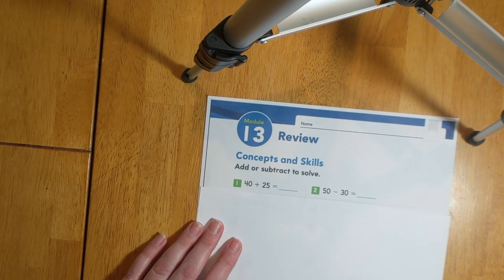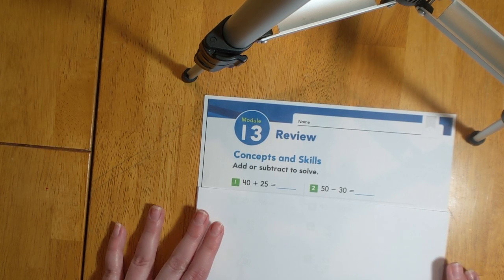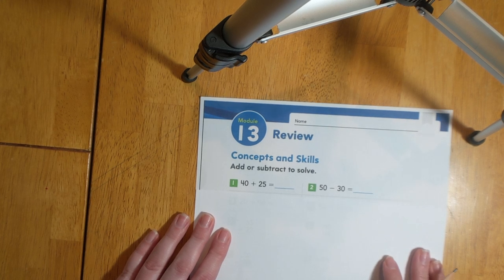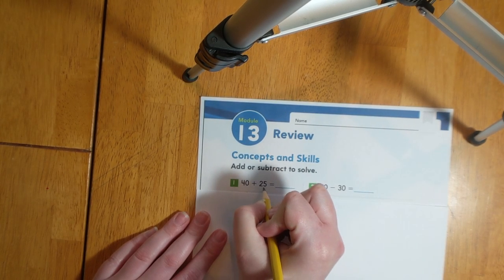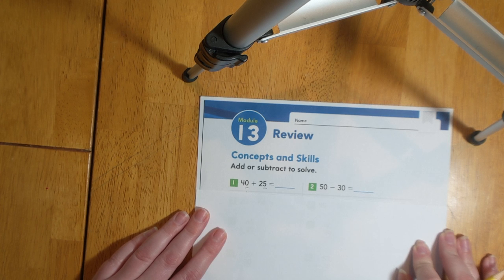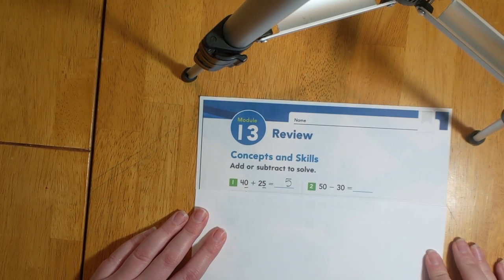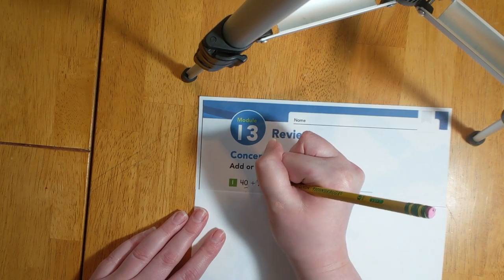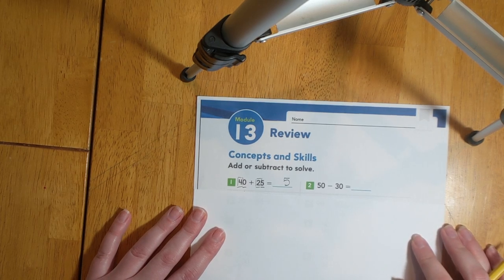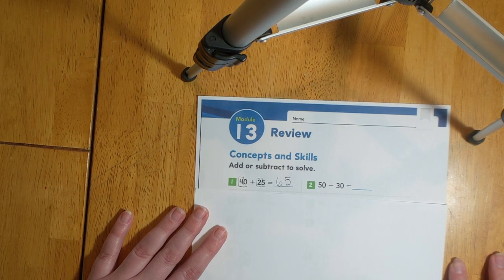For these first few problems we're going to add or subtract to solve. For number one we are adding 40 and 25. What I'm going to do first is I'm going to add my ones. So I will underline my five and zero because those are in the ones place. I know that zero plus five equals five. Next I'm going to add my tens. I'll draw a box around those. I know that four plus two equals six. So 40 plus 25 equals 65.